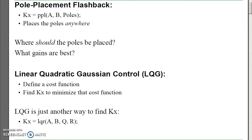Linear quadratic Gaussian control, or LQG control, is another way to find the feedback gain kx. What you do is define a cost function — penalize x squared and u squared — meaning drive the states to zero, but don't use too much input. Once you define the cost function, find the feedback gains that minimize it. In essence, you're finding the optimal feedback gains, meaning the optimal pole locations of the closed-loop system.